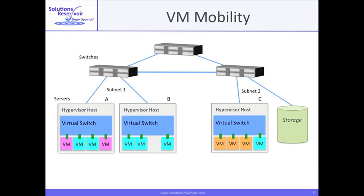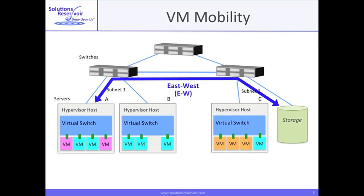You will hear terms describing the direction of traffic flow. North-south traffic basically flows in a hierarchical fashion, shown here as between VMs and ultimately the Internet. Spanning tree protocol fosters this kind of directional flow. East-west traffic tends to flow more on a peer-to-peer basis, such as between VMs or between VMs and resources like storage.